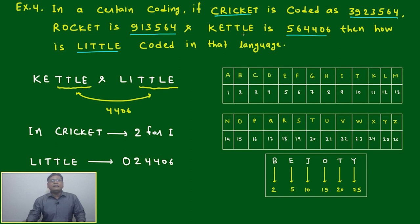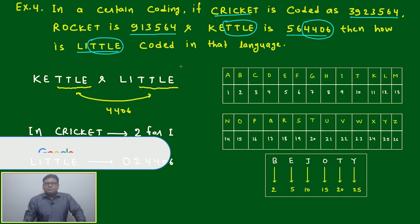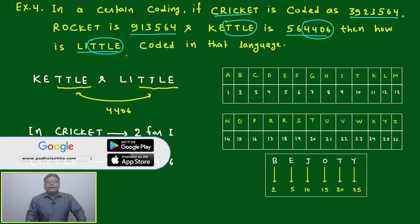Just by simple observation, this part is common - TTLE appears here and here. This will give the clue and reduce your effort. This same question, if it's option-based - because I'm not giving you options now but in exams most of the time you'll get options - if you get the option, then what will happen? LITTLE must have the last four digits as 4406 because the last four alphabets are the same: TTLE. Then it must be 4406. With four options given, I'm 100% sure you'll be able to eliminate two or three options.